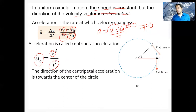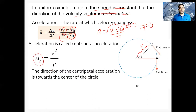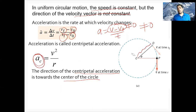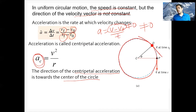The acceleration is given by a_c = v²/r, where v is the constant speed and r is the radius of the circle. I won't derive it, but this is the formula. This acceleration is called centripetal acceleration — denoted a_c — meaning it is directed towards the center of the circle.